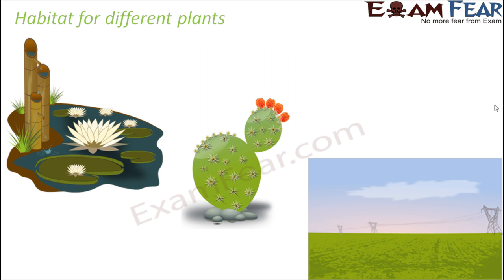When we talk about habitat for plants, plants again have many different types of habitats. There are certain plants which love to live in water — for example, lotus and lily, which you would have seen in ponds or lakes. Then you have plants like cactus, which look very different from other plants because cactus do not have leaves. Instead they have spines or thorns, and their structure is such that they can survive with very little water.